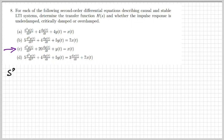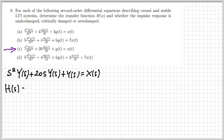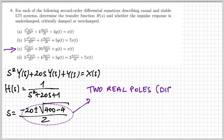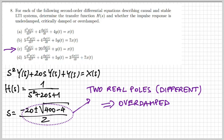For part C I do the same thing. H(s) is 1 over s² + 20s + 1. The roots are real but distinct — two different real poles. Recall that in part A there were also two real poles, but they were identical. Since these two real poles are distinct, the system is overdamped.